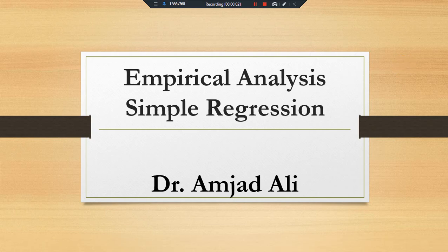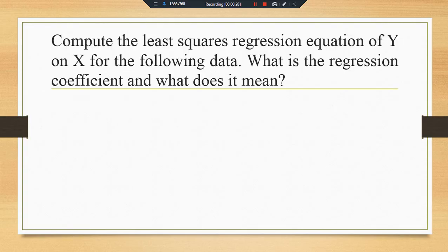In this video we are going to conduct empirical analysis of the formulation which we covered in the previous video — the estimated values of alpha and beta for a and b, and then with the help of a and b parameters we can find the estimated regression line. I am Dr. Amjad Ali. We have a first example: compute the least squares regression equation of y on x for the following data. What is the regression coefficient and what does it mean?